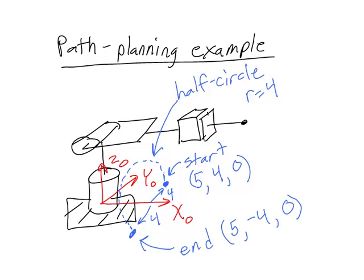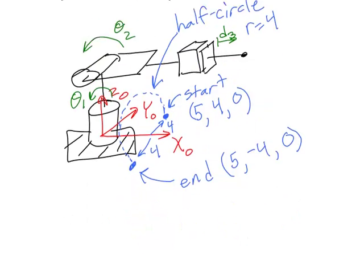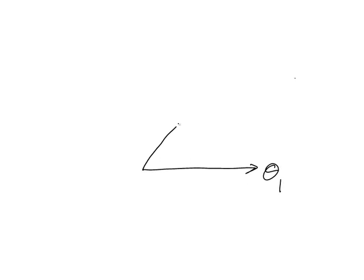Our manipulator has two angles, theta1 and theta2, and it also has one displacement variable which I'll call D3. I give it the 3 subscript because it affects the 3 frame. I have the 0 frame drawn in here, and there's also a 1 frame, 2 frame, and then the 3 frame on the end effector. So when I draw the configuration space for this manipulator, it will have 3 axes: theta1, theta2, and D3.